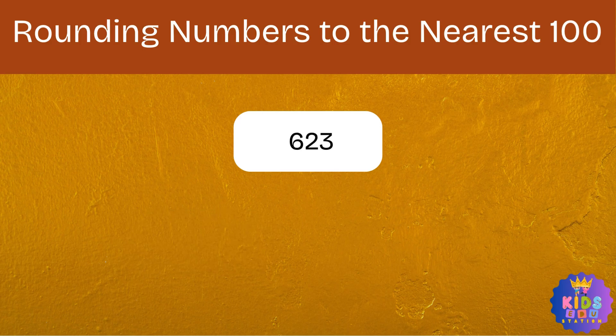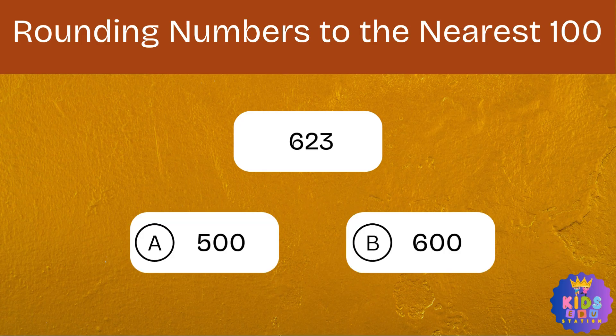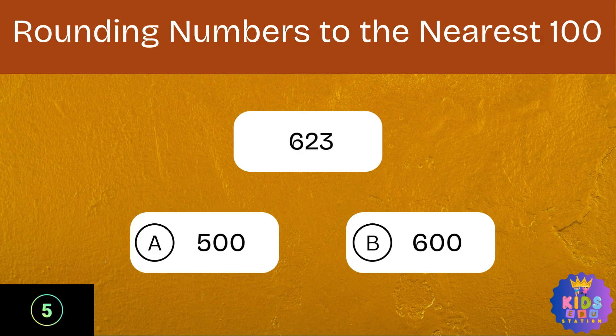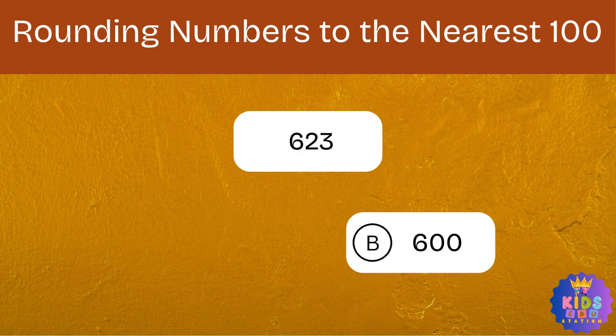Round 623 to the nearest hundred. Option A: 500. Option B: 600. And the correct answer is 600.